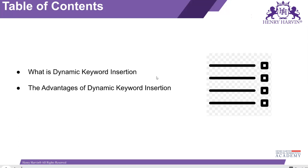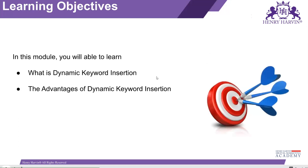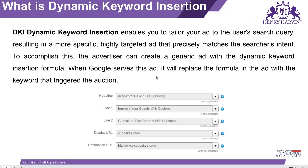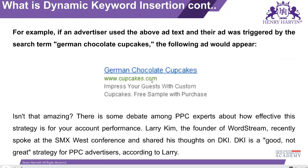Today's topic is dynamic keyword insertion, a very short topic. It simply means that when someone searches for 'German cake cups,' you are selling cake cups and the name of the business is Cupcakes but they have German chocolate cupcakes. So when someone searches with this particular keyword, your ad will be shown along with that keyword.